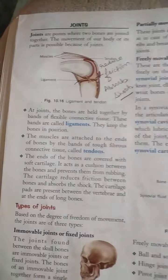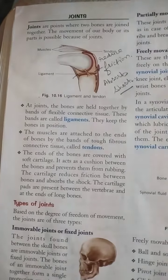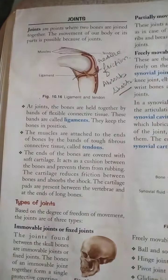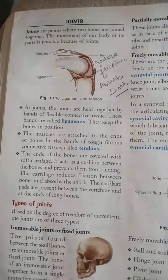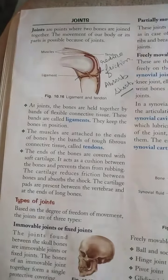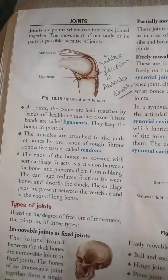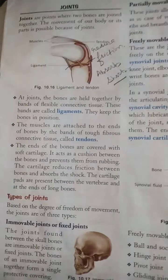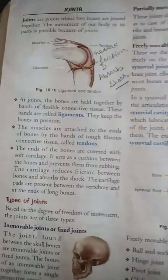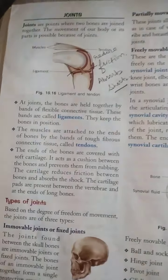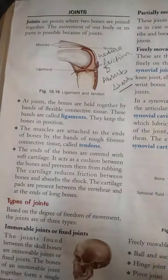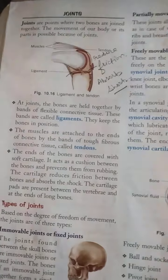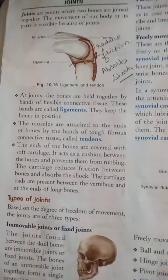Cartilage pads are present between the vertebrae and at the ends of long bones. This cartilage is present between all vertebrae and at the ends of long bones. In the case of knees, elbows, and ball-and-socket joints, cartilage is also present.